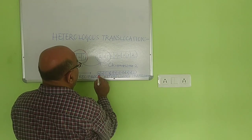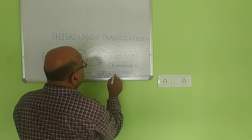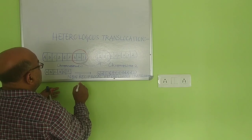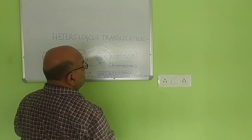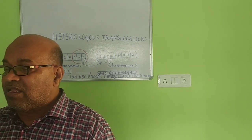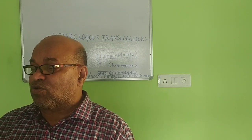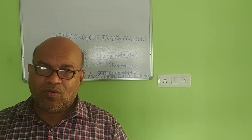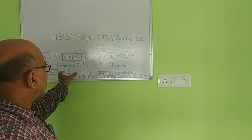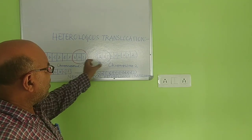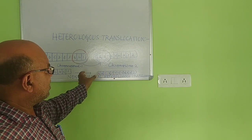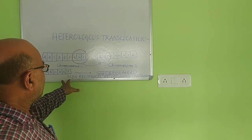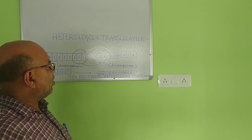The segment carrying G, H, I is shifted toward chromosome 2 and hence this fragment separates from chromosome 1. A, B, C, D, E, F remain in chromosome 1 while G, H, I connect at the apical region of chromosome 2, which will then carry G, H, I, R, S, T, U, V, W, X, Y, Z — 12 genes. This is called non-reciprocal heterologous translocation.